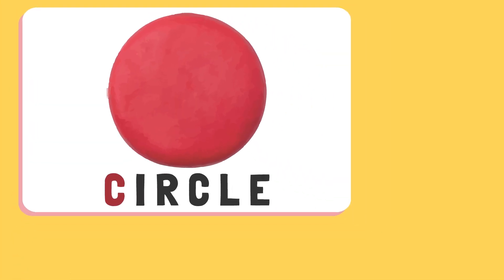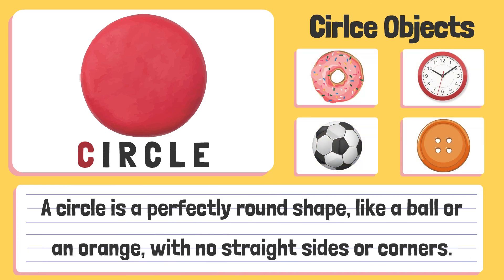Circle. A circle is a perfectly round shape, like a ball or an orange, with no straight sides or corners.